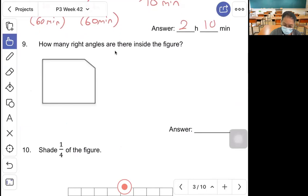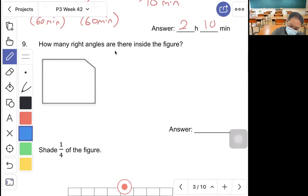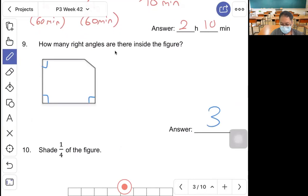Question 9, how many right angles are there inside the figure? Let's count: 1, 2, 3. Three right angles.